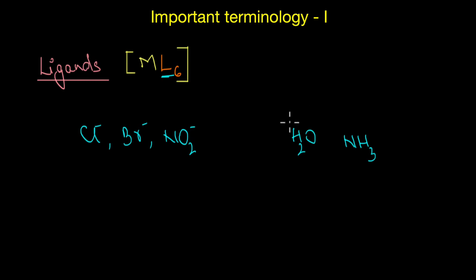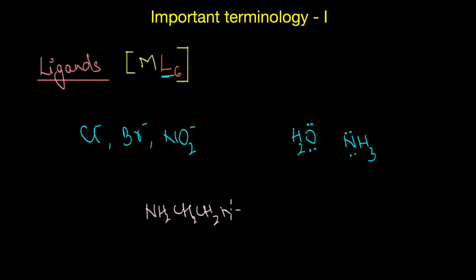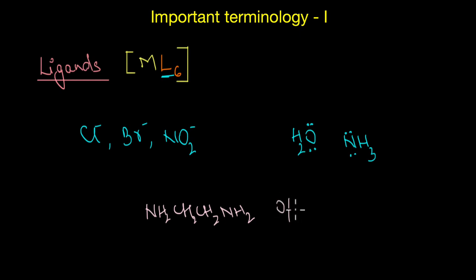Even larger molecules like ethylenediamine (NH2CH2CH2NH2), or even larger macromolecules like proteins, can also act as ligands, as long as they have a donor atom such as oxygen or nitrogen and can act as a Lewis base ligand.